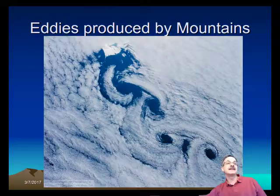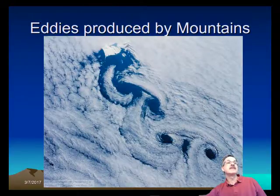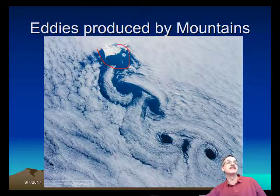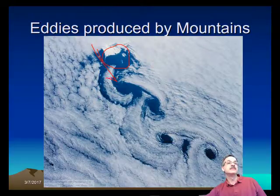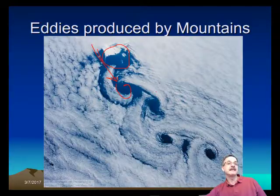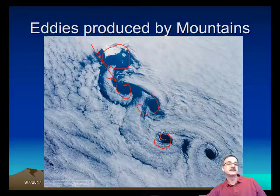Here's an eddy produced by a mountain. Here's the mountain sticking above the cloud layer, and as the wind blows the clouds by, you get these turbulent eddies in the clouds, mixing the material in the atmosphere.